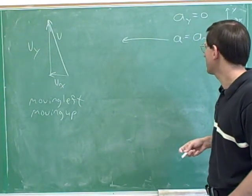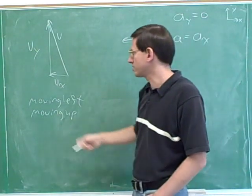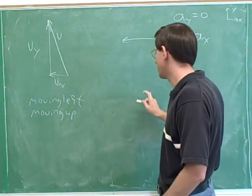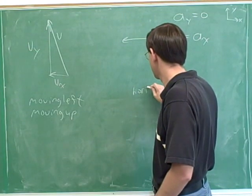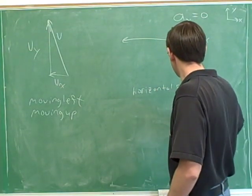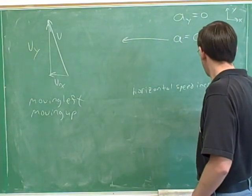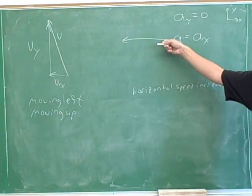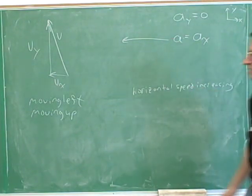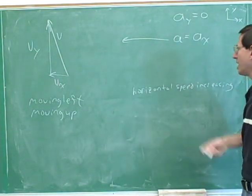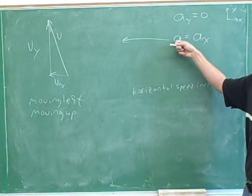So horizontally, our horizontal acceleration is pointing left and our horizontal velocity is pointing left, so our horizontal speed is increasing. The horizontal velocity is parallel to the horizontal acceleration: v sub x is pointing to the left and a sub x is also pointing to the left. A sub x here is the same as the overall acceleration.